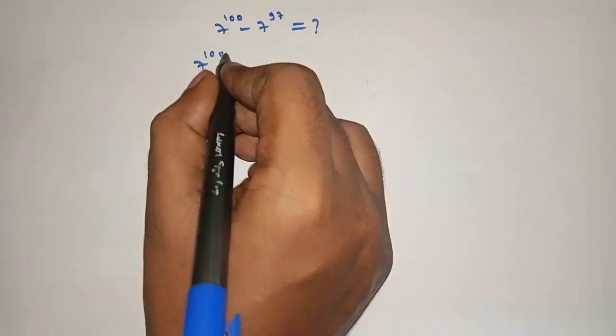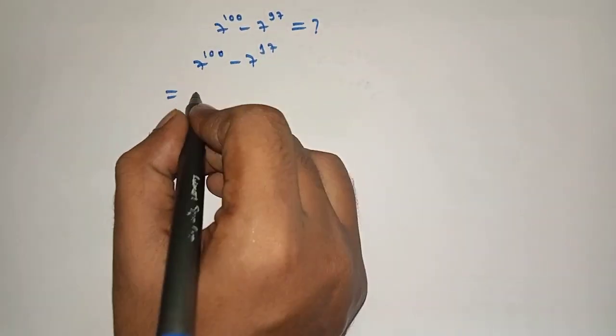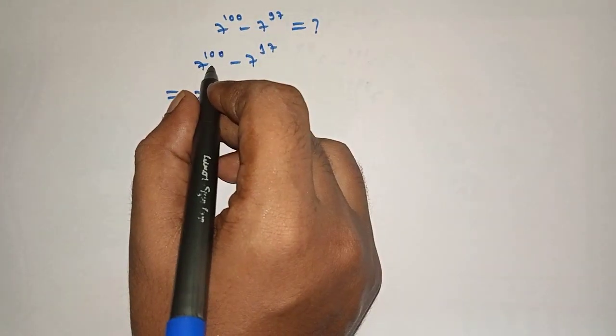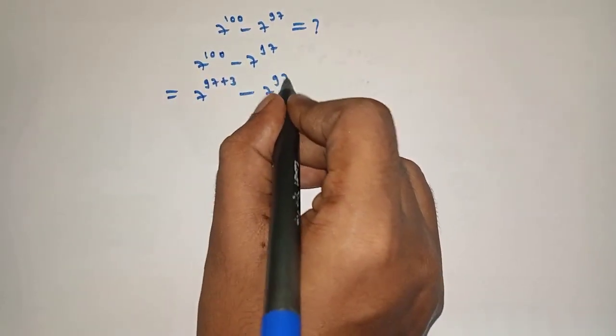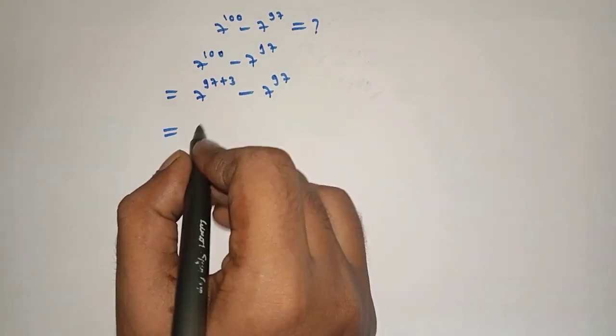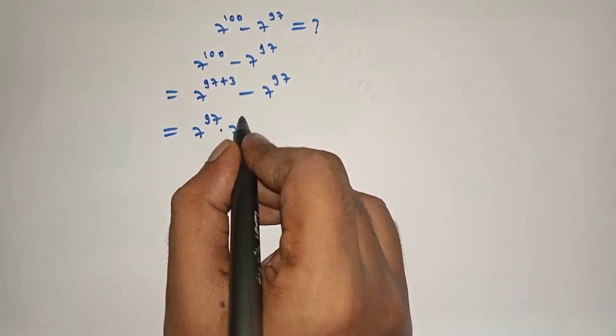7 raised to 100 minus 7 raised to 97 is equal to 7 raised to 100 can be written as 97 plus 3 minus 7 raised to 97, which is equal to 7 raised to 97 into 7 raised to 3 minus 7 raised to 97.